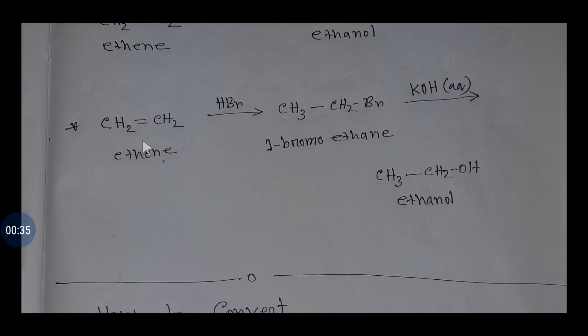This is ethene, and if you add here hydrogen bromide, an addition reaction will happen. This double bond will be broken and we'll get this compound, one bromo ethane or bromo ethane.